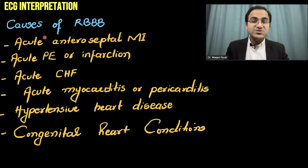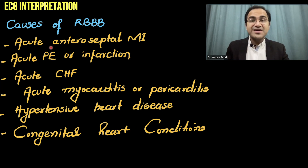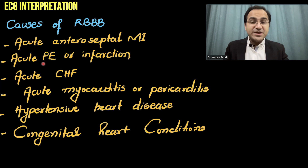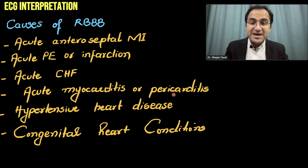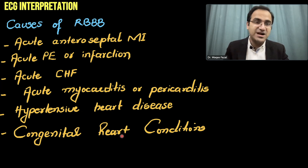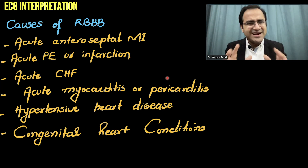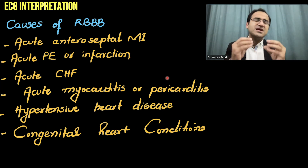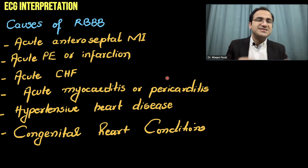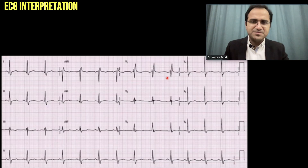Now, coming to the causes of right bundle branch block. Right bundle branch block occurs due to acute anteroseptal MI, acute pulmonary embolism or infarction, acute congestive heart failure, acute myocarditis, pericarditis, hypertensive heart disease, and congenital heart conditions. Anything that damages the right side of the heart can affect the bundle branches and result in bundle branch block.